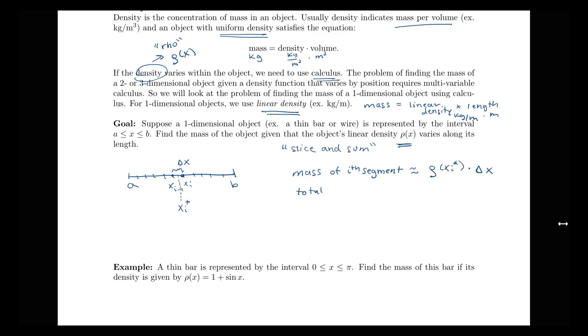So our total mass here would then be equal to the limit as n goes to infinity, taking those intervals to be smaller and smaller, of the sum from i equals 1 to n of our density times our length. And then we recognize this as a limit of our Riemann sum. So we get this formula that our mass is equal to this integral from a to b of ρ(x) dx.